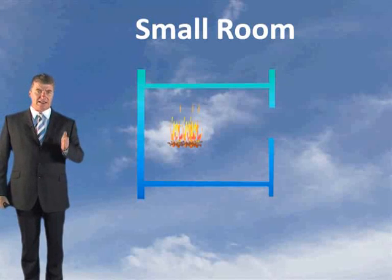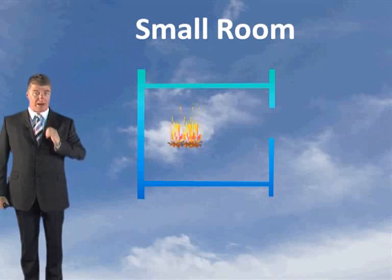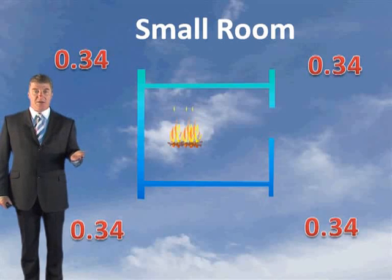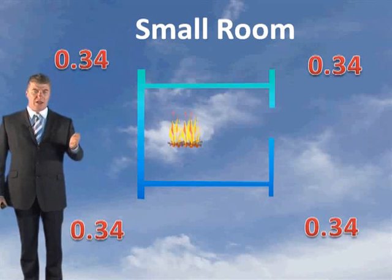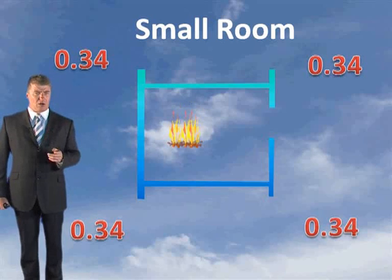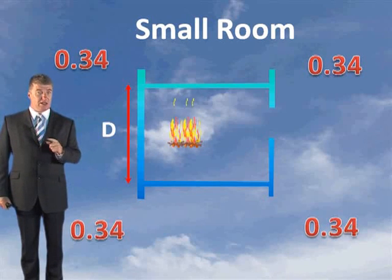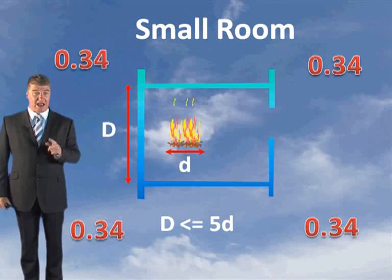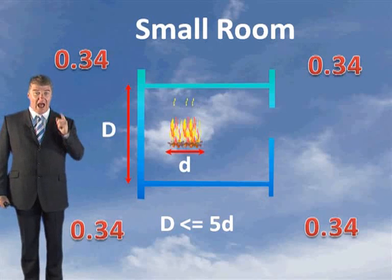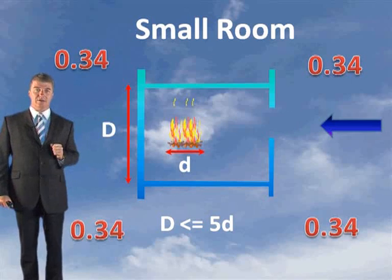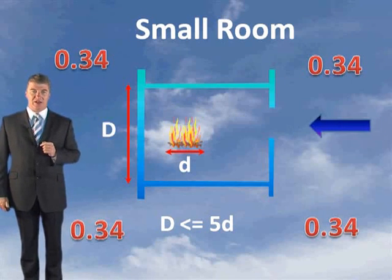If it's classified as a small room, you use 0.34 as your coefficient. A room is considered small when the maximum room dimension is less than or equal to 5 times the diameter of the design fire, and air can only come in from one direction. In this case we're not using 0.34 because air can come in from more than one entrance.